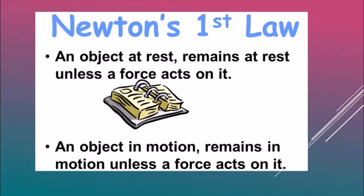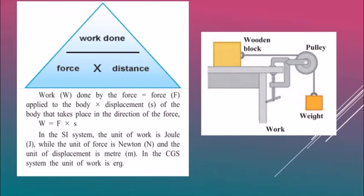Force, displacement, and work are all connected to each other. As shown in the figure, there is a wooden block being pulled by a weight. To pull the wooden block, a sufficient amount of force must be applied. When the wooden block moves forward, it has been displaced. Due to this displacement, we say that the force has done some work — meaning there is a connection between force and work.